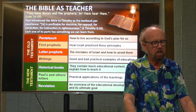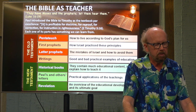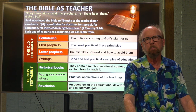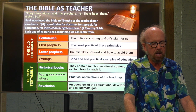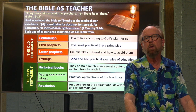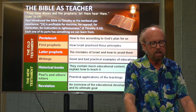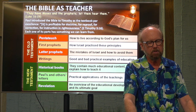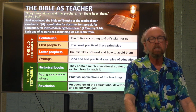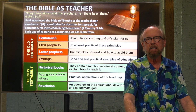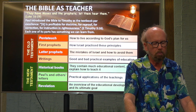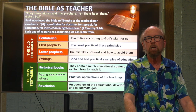Each one of its parts has something we can learn from. In the Old Testament we find first the Pentateuch — the first five books of the Bible, the books of Moses — which detail how to live according to God's plan for us. The first prophets give us lessons on how Israel practiced these principles. The later prophets teach us of the mistakes of Israel and how to avoid them. The writings give us good and bad practical examples of education. In the New Testament, the historical books contain much educational content. Paul's and other letters contain practical applications of the teachings. And finally, the book of Revelation is an overview of the educational development and its ultimate goal, which is our salvation.